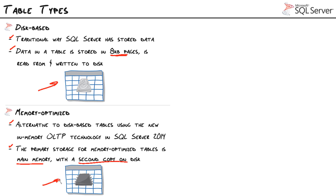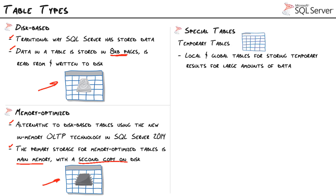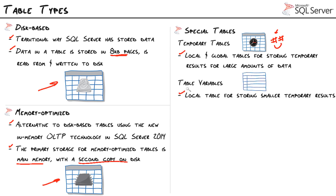We also have special table types. Temporary tables are great for processing and storing intermediate results. Local temporary tables last only for the length of the connection using them; global temporary tables last across all connections until the last connection using them is closed. They're stored in tempdb. Table variables serve the same purpose — temporary results for staging or intermediate data — but with variable scope, existing only as long as your stored procedure, script, or function uses them. Both are stored in tempdb, so there aren't many performance differences. General rule: use temporary tables for large amounts of data, table variables for smaller amounts.